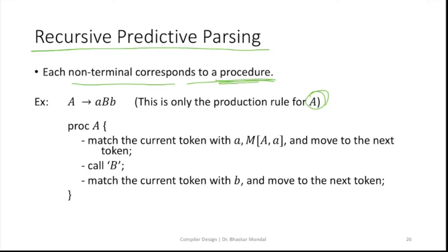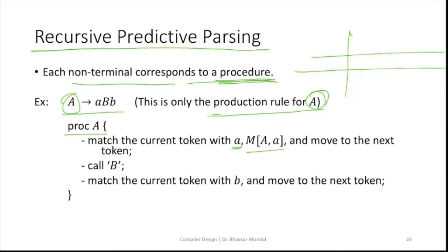Now if we have A → a B b, this is the production rule for A. Procedure A is going to run because we are starting with A. In procedure A, we match the current token 'a' using the parse table — we search for the match of A and the token. We move to the next token. If there is no other token before b, it will immediately call procedure B.